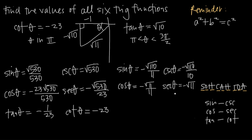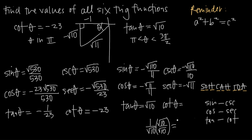Finally, we already know tangent of theta is square root 10, so cotangent is its reciprocal: 1 over root 10. Rationalizing gives root 10 over 10. And that's how, knowing just one trig function value and the quadrant of theta, along with the Pythagorean theorem and SOHCAHTOA, you can find all six circular trig functions.